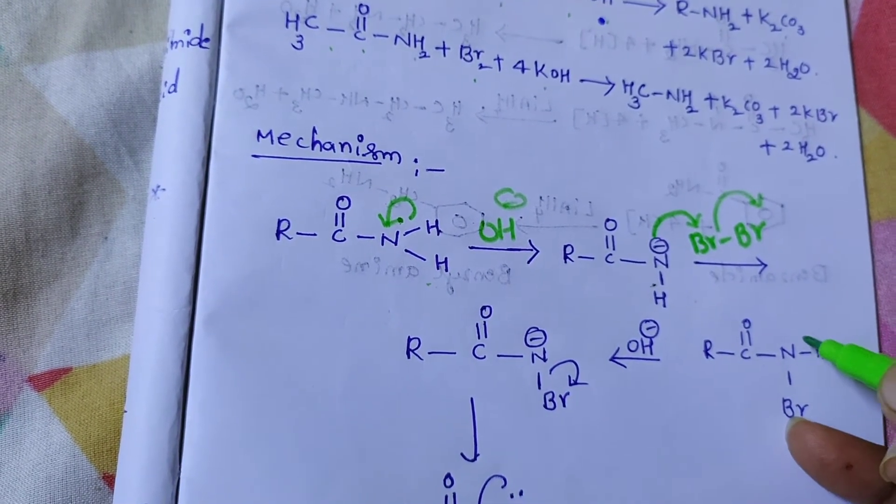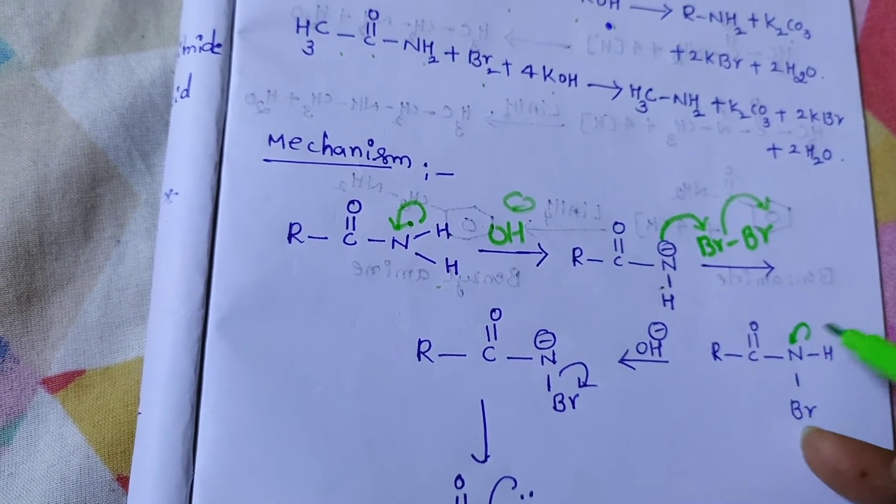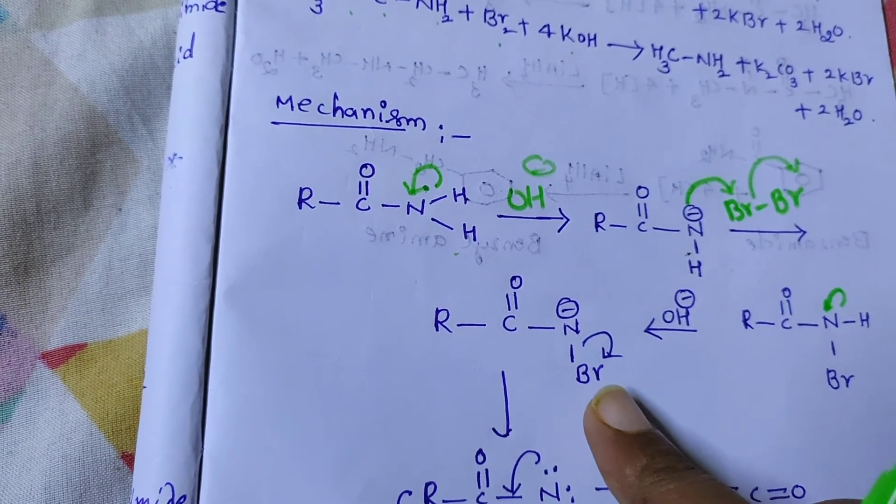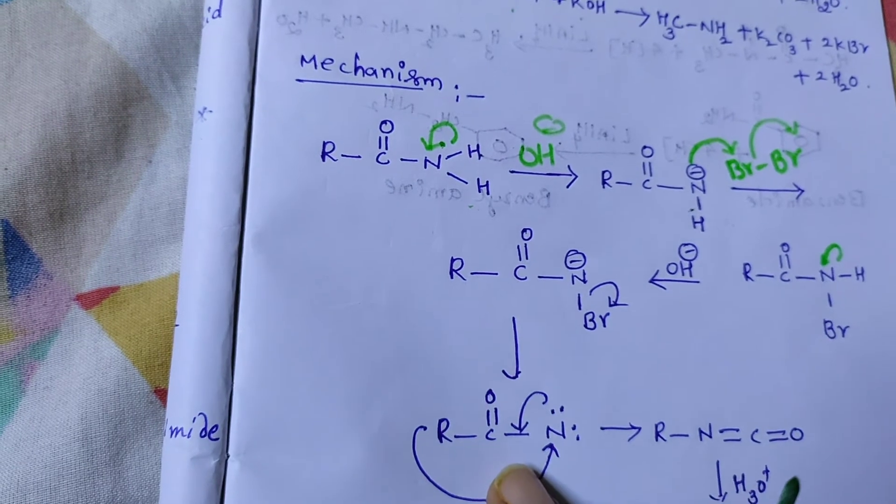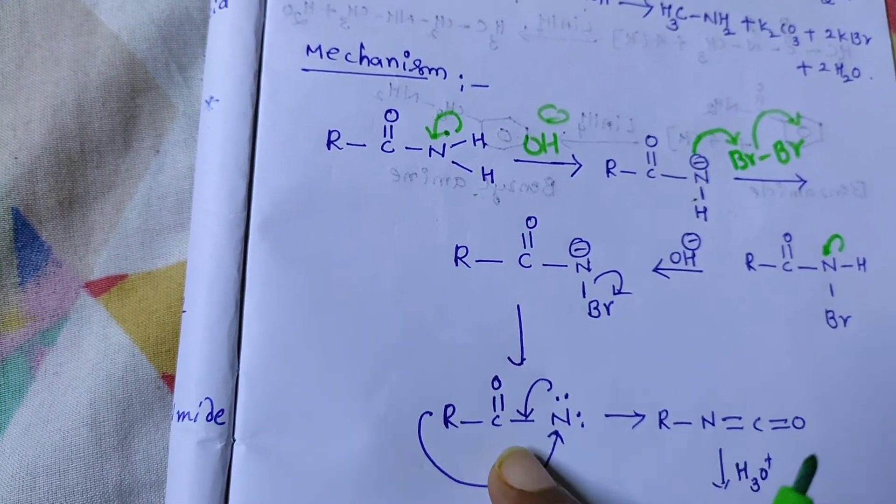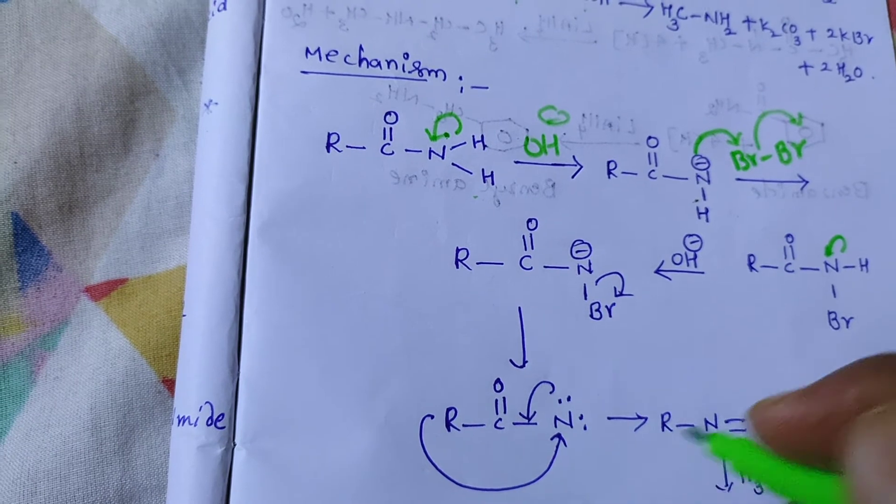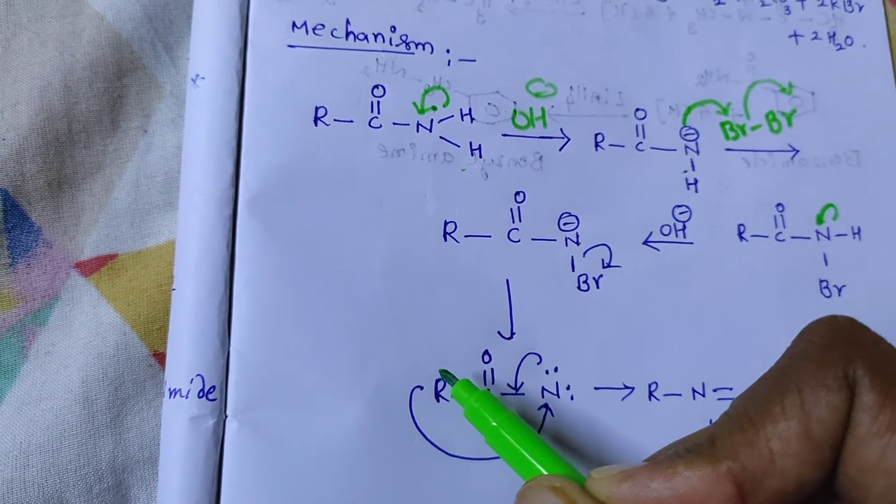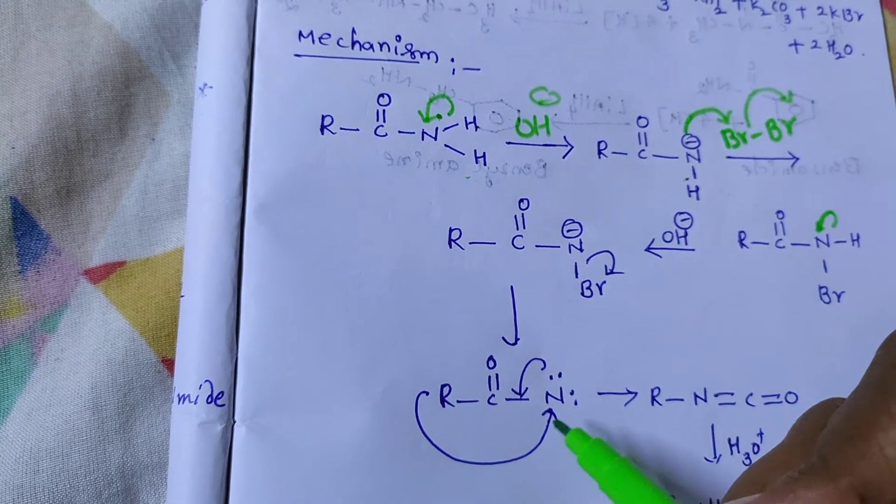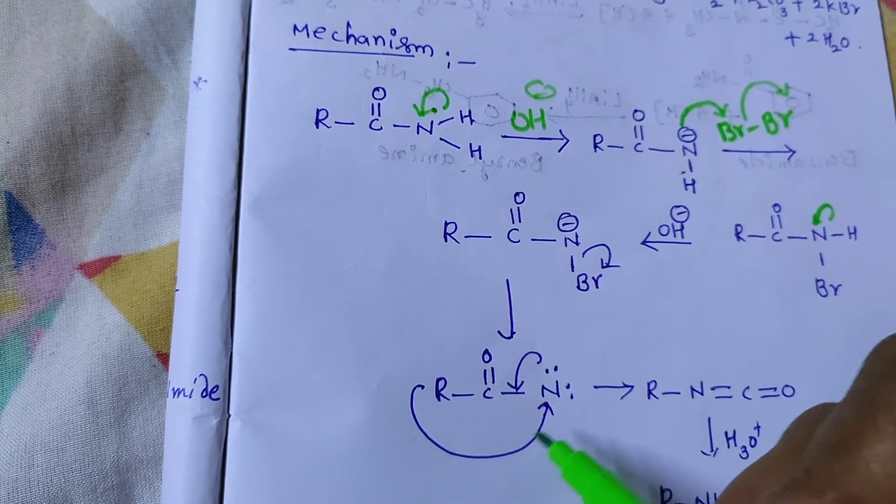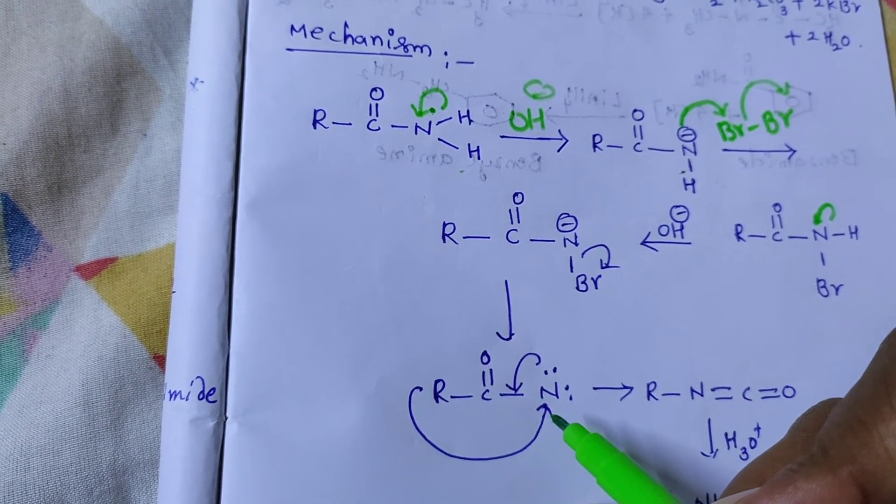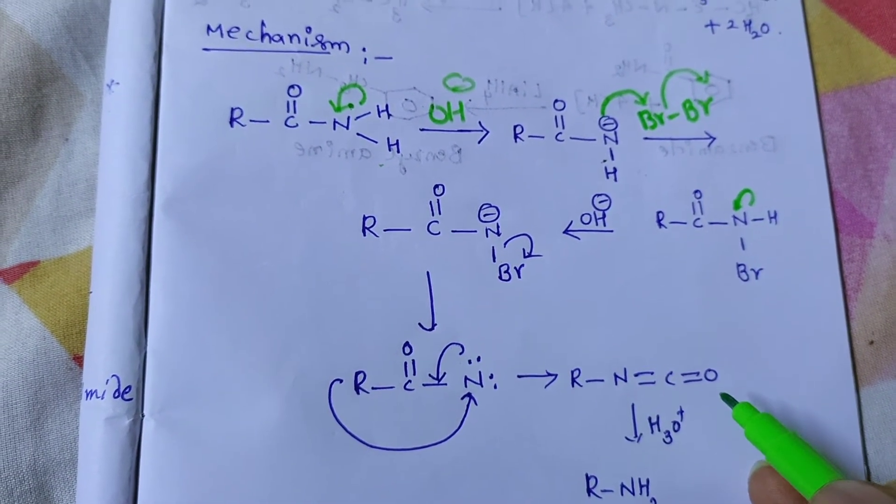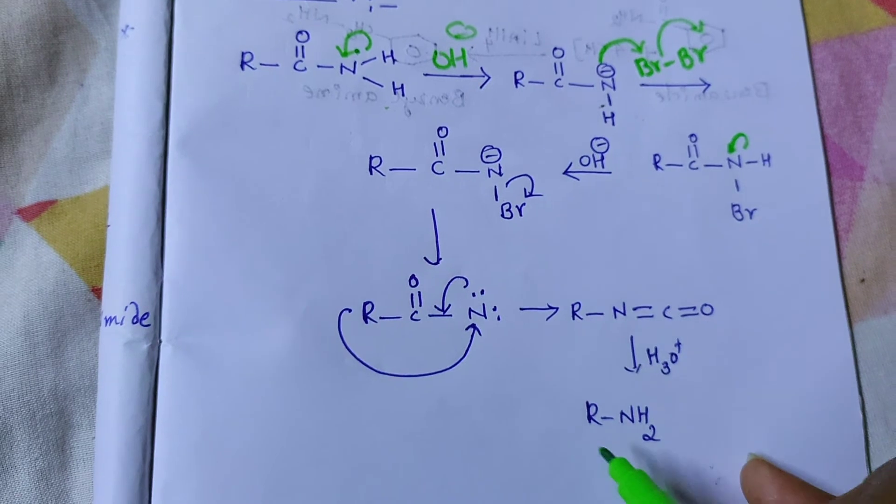If I remove this bromine, we get this one. Here, rearrangement will take place. These two electrons shift here. The alkyl group leaves this carbon and attaches itself to the nitrogen to form an alkyl isocyanate which is hydrolyzed to give an amine. This is the amine.